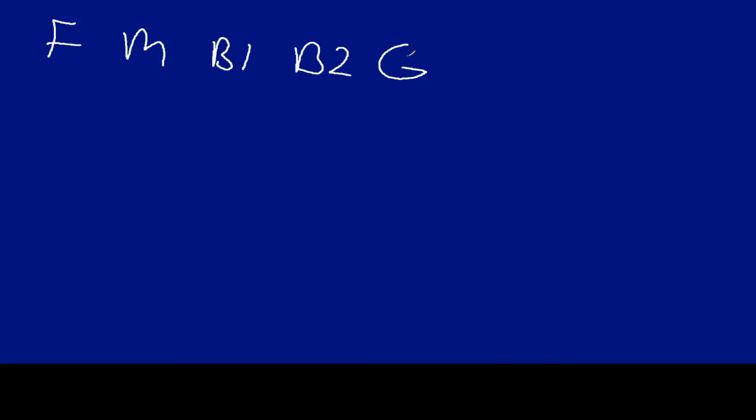So we have five people here. We have a father, a mother, two boys, and a girl. And so we need to figure out how many different ways can they line up, for example, to go on a roller coaster or to go into a restaurant, whatever.